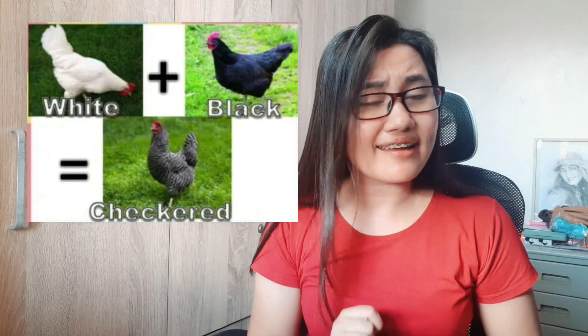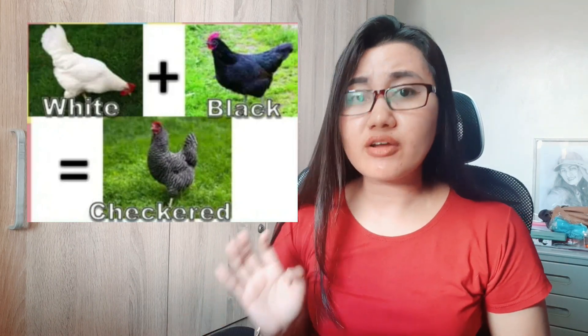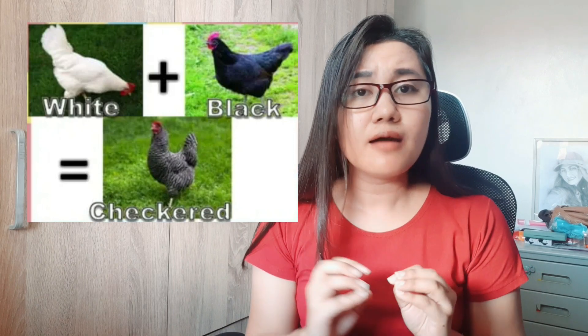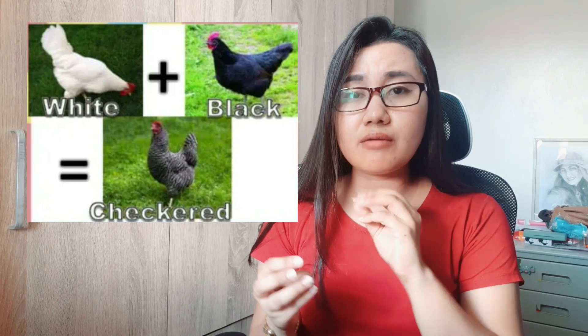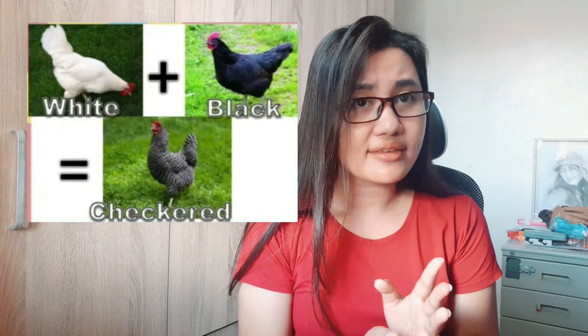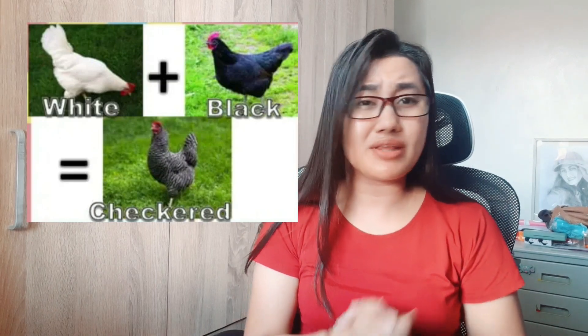Unlike incomplete dominance where neither trait appears and a new phenotype emerges, in codominance both traits of both parents are visible in the offspring. Another example — look at this chicken. A white and black chicken crossed, and the result is not gray, but a pattern with parts that are black and parts that are white. That is an example of codominance.